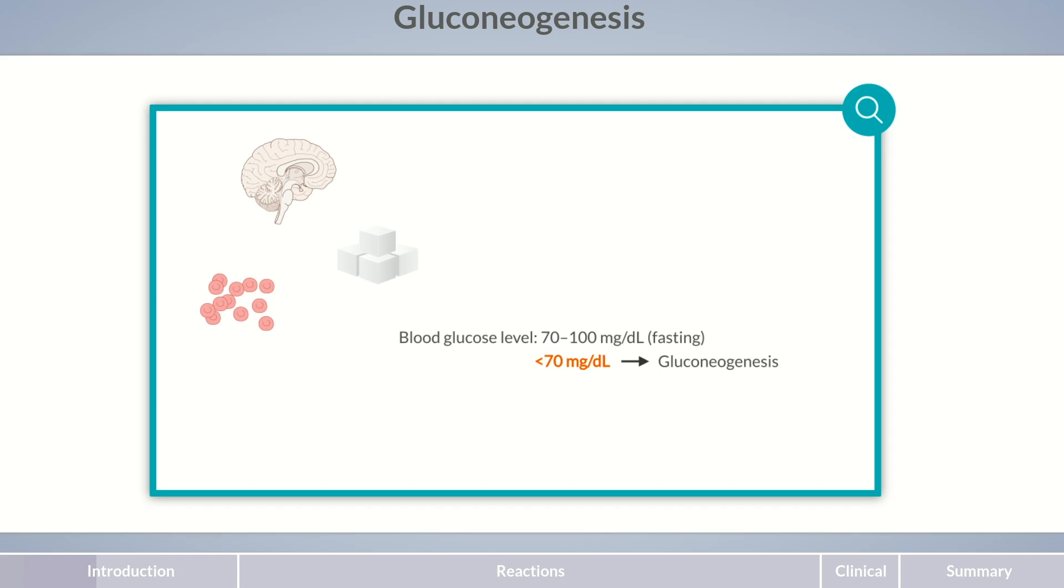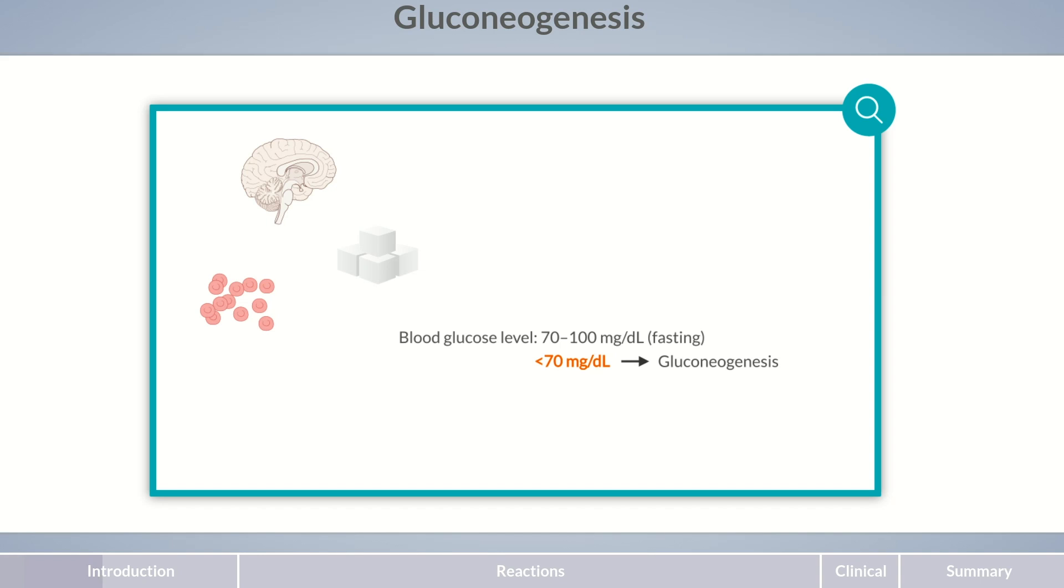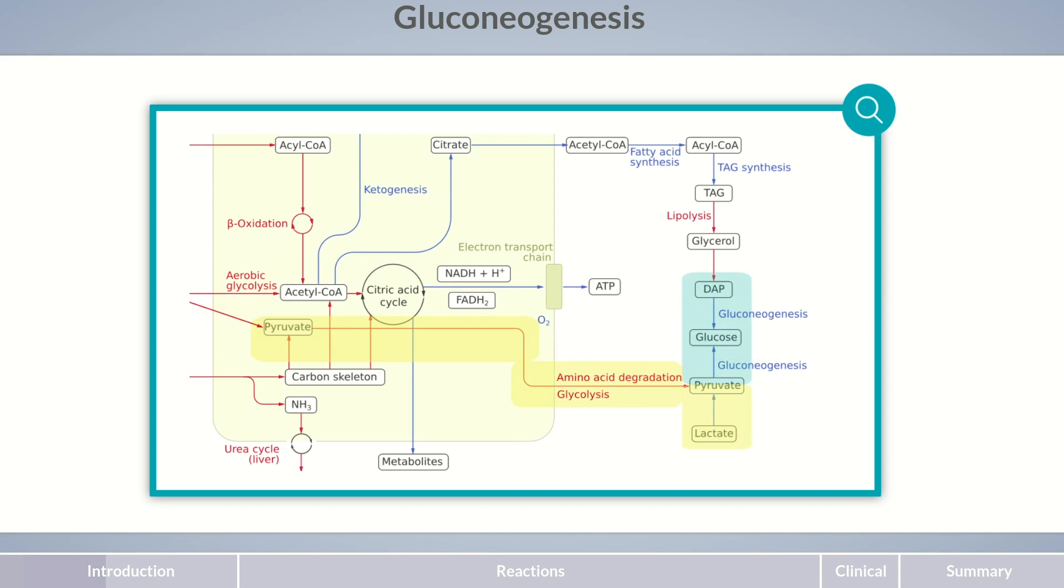This process is termed gluconeogenesis, which means synthesis of new glucose. As a substrate, gluconeogenesis mainly uses pyruvate, which comes from the breakdown of lactate, glycolysis, or amino acid degradation.